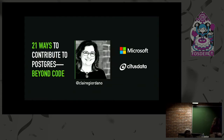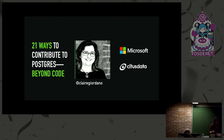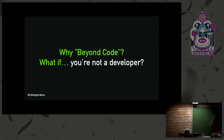I joined Citus Data three years ago. Citus' claim to fame is we've created an open source extension to Postgres called Citus that scales out Postgres horizontally. The reason the Microsoft logo is there — we got acquired a year ago, so I now work for Microsoft. These days I'm actually quite happy with the company that Microsoft is growing up to become.